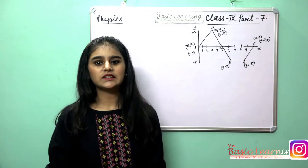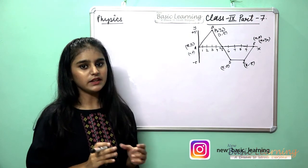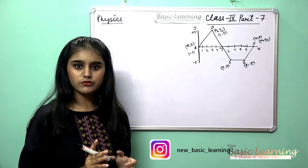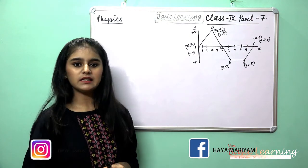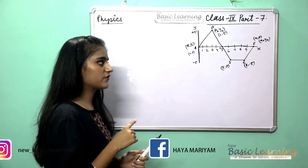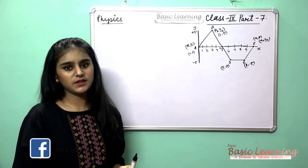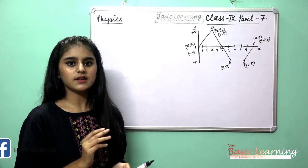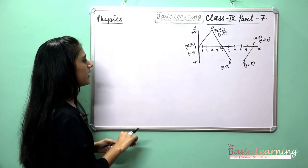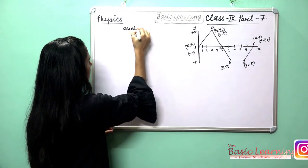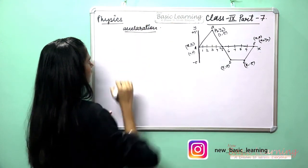Hi guys and welcome again to New Basic Learning. Today we are going to learn about physics related to the velocity-time graph. This chapter is in continuation — motion in one dimension for class 9. Part 6 covered distance and displacement using the velocity-time graph, and now in this part we are going to cover the acceleration part.